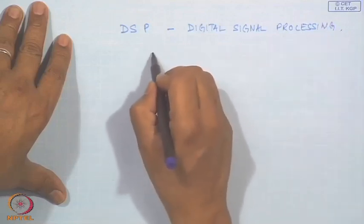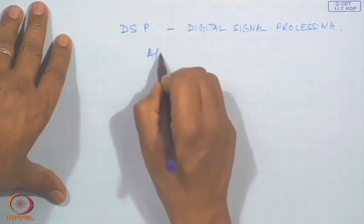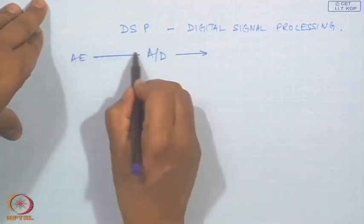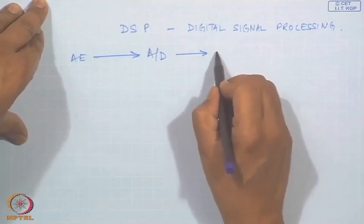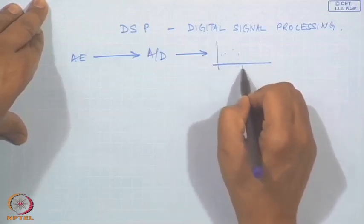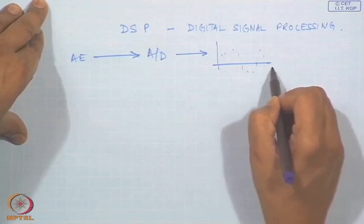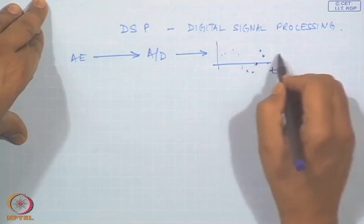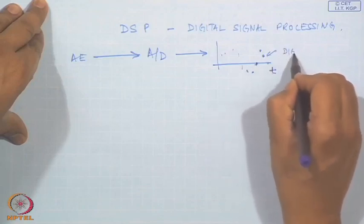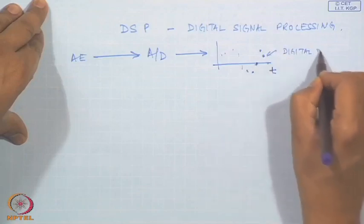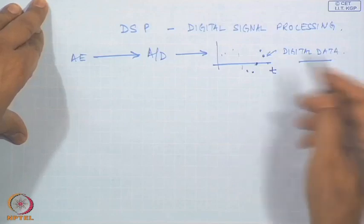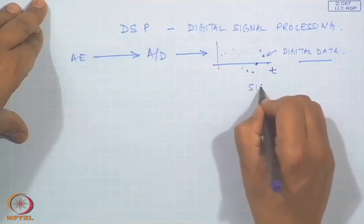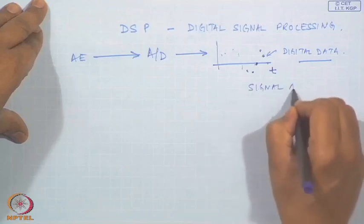We have to acquire acoustic emission signals through an A-to-D process. Once we have the digital data, we can do some sort of analysis on the computer.